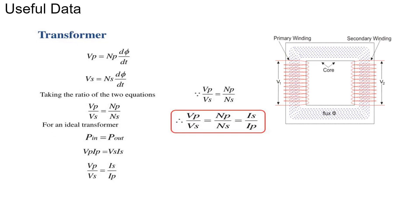For an ideal transformer, if there are no magnetic and resistance losses, power supplied equals power delivered. So Vp × Ip = Vs × Is. From this we can say that Vp/Vs = Is/Ip. Using this information, let us solve the problem.